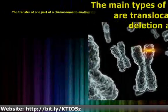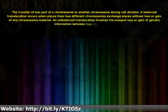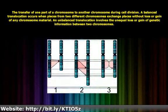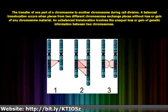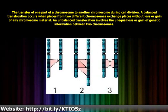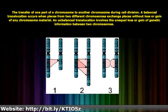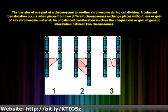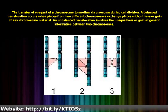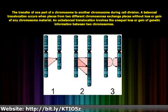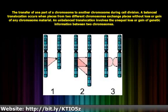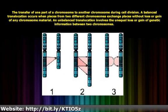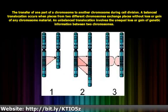Translocation is the transfer of one part of a chromosome to another chromosome during cell division. A balanced translocation occurs when pieces from two different chromosomes exchange places without loss or gain of any chromosome material. An unbalanced translocation involves the unequal loss or gain of genetic information between two chromosomes.